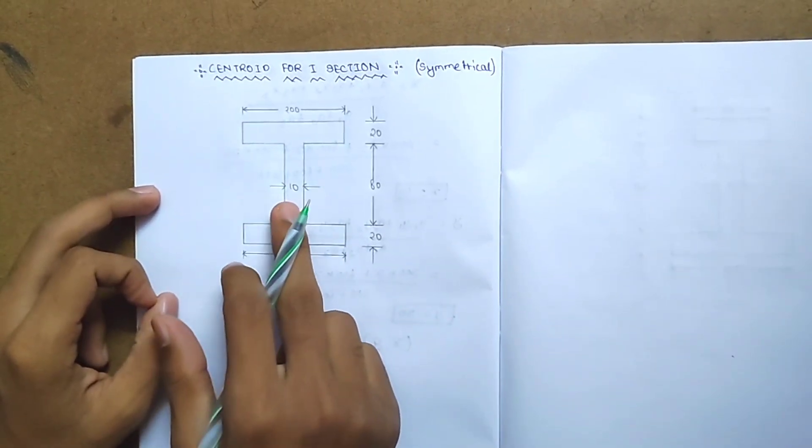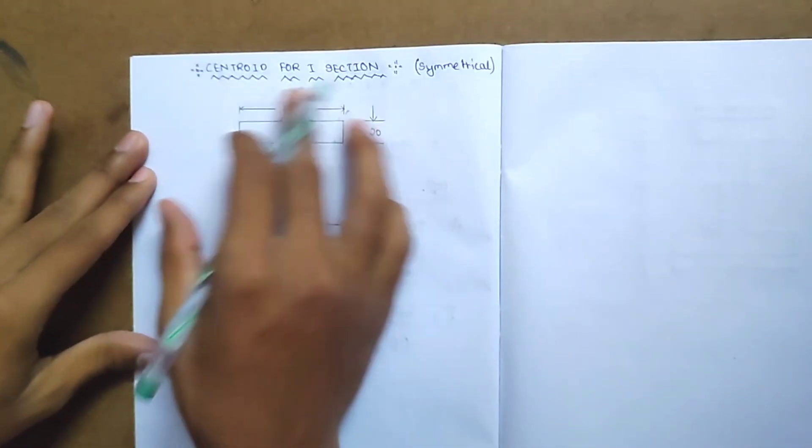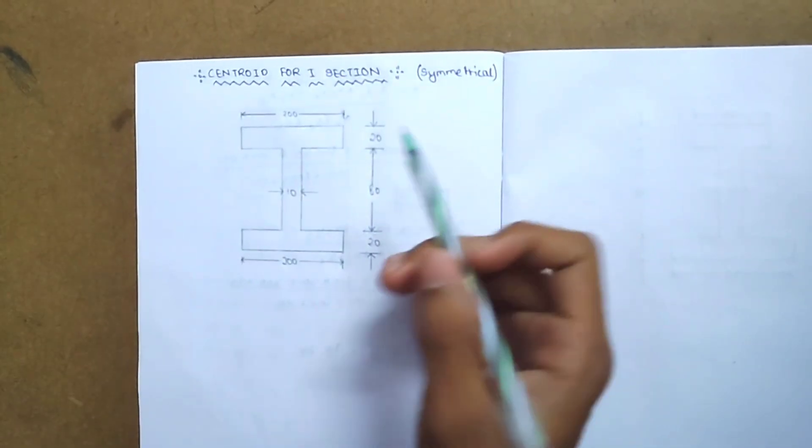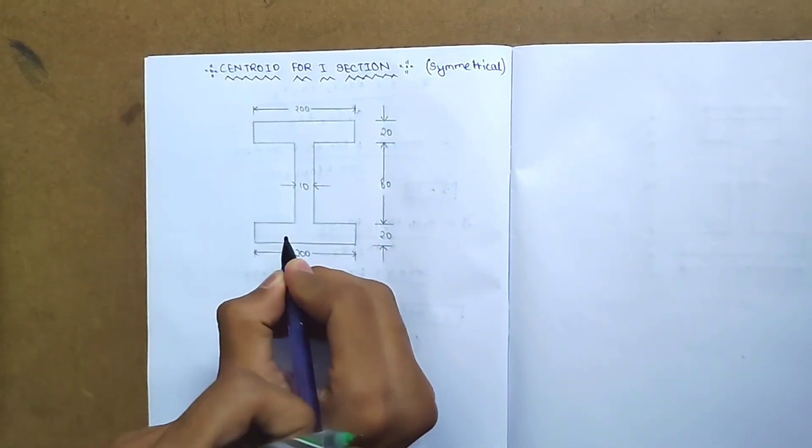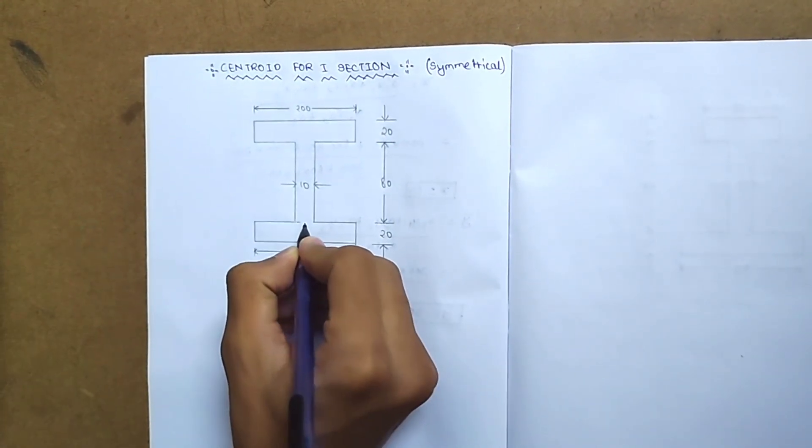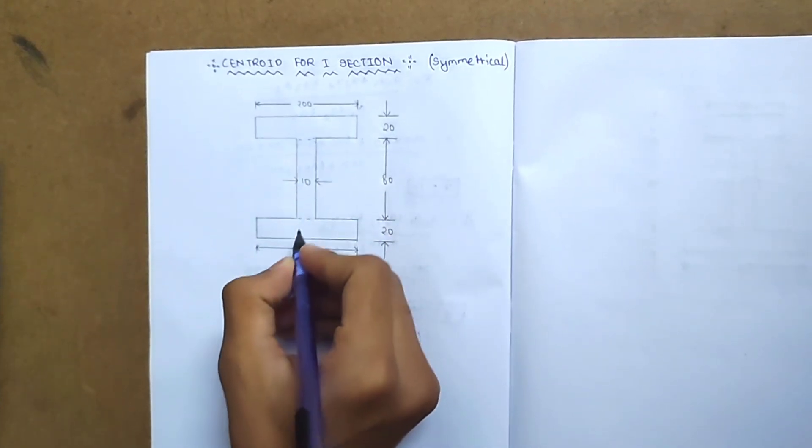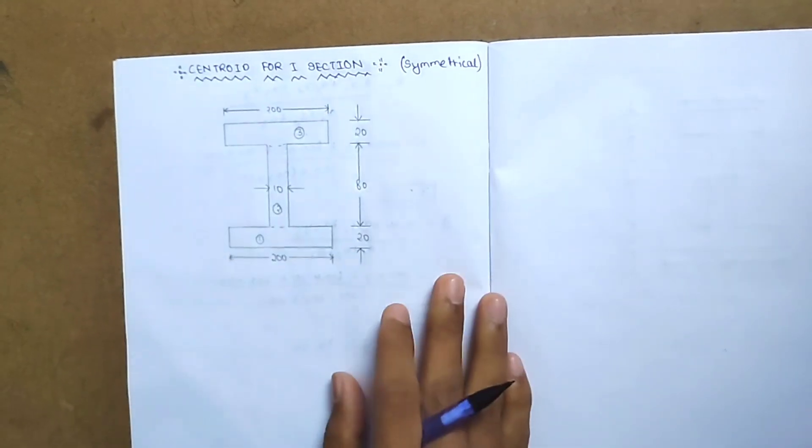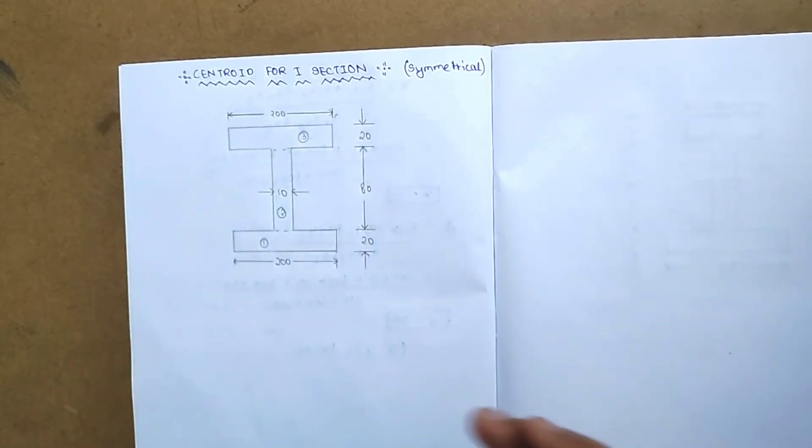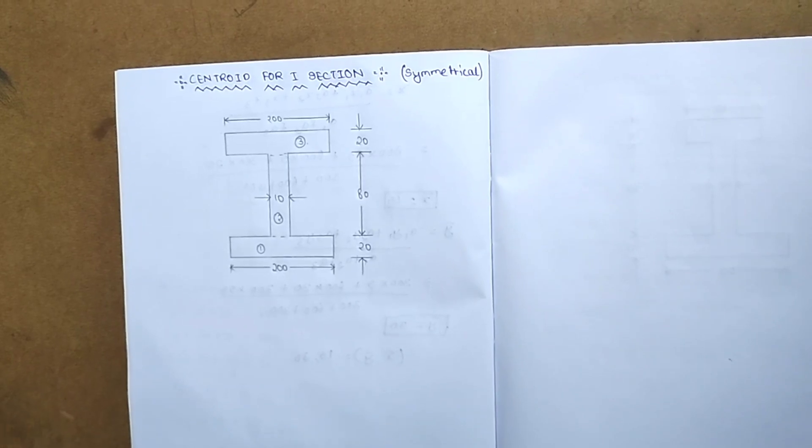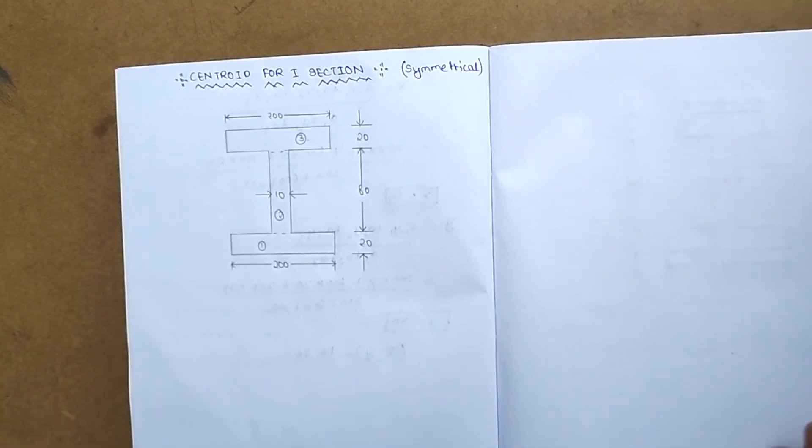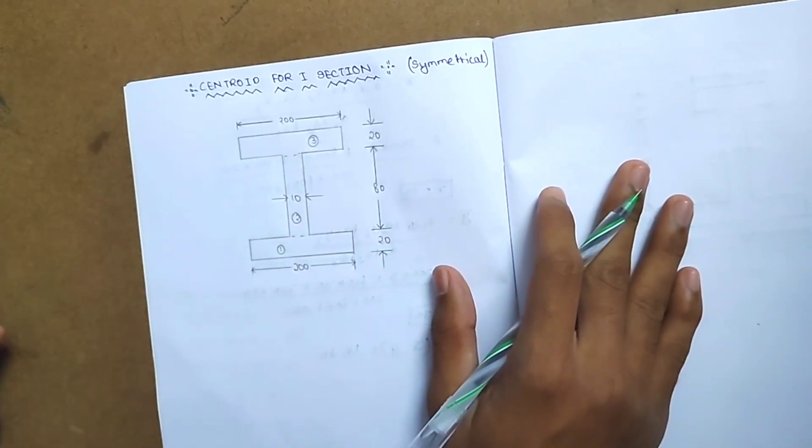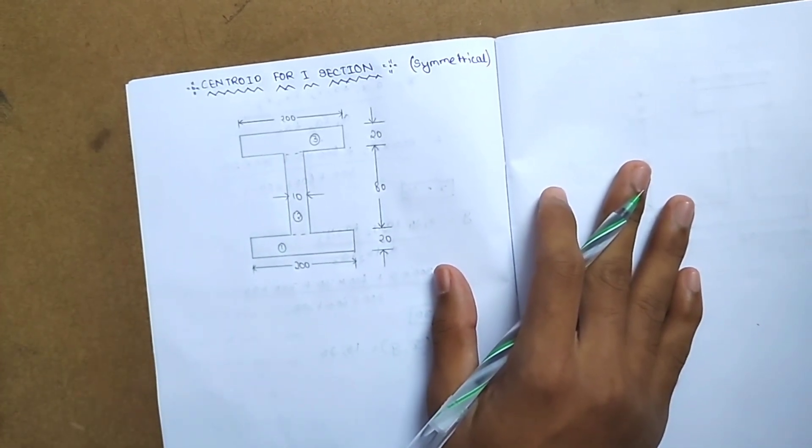For this symmetrical section, I'm going to use a trick. We can use the top of the top flange or any reference line.